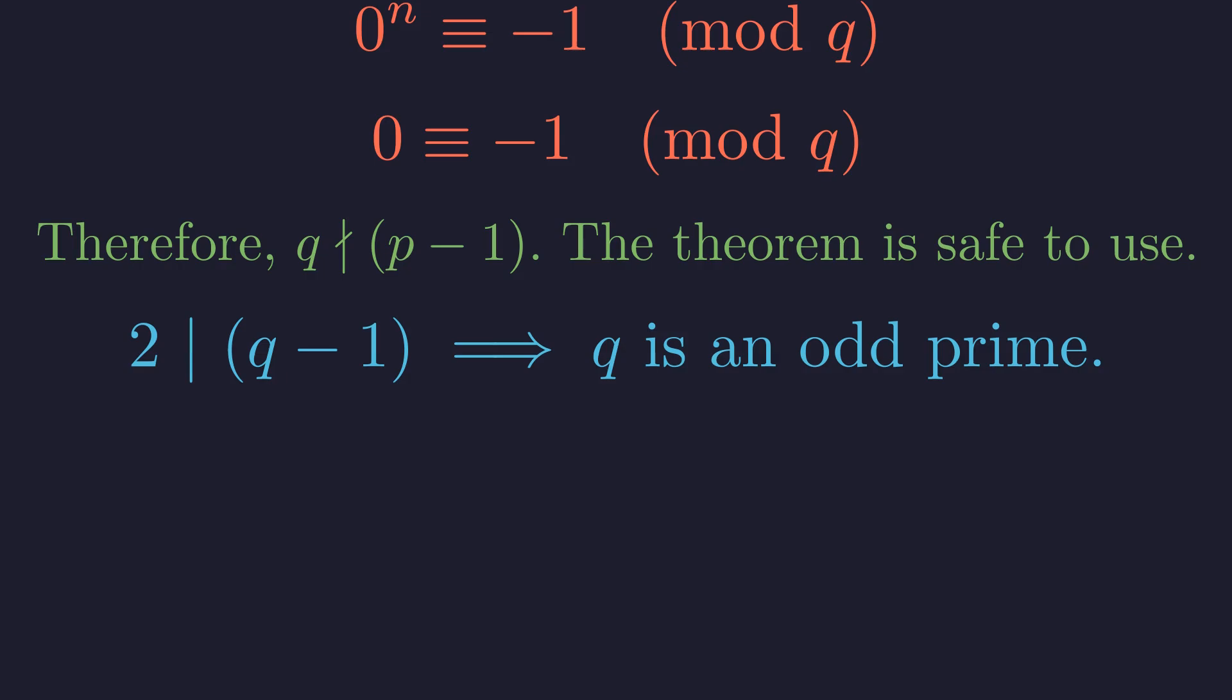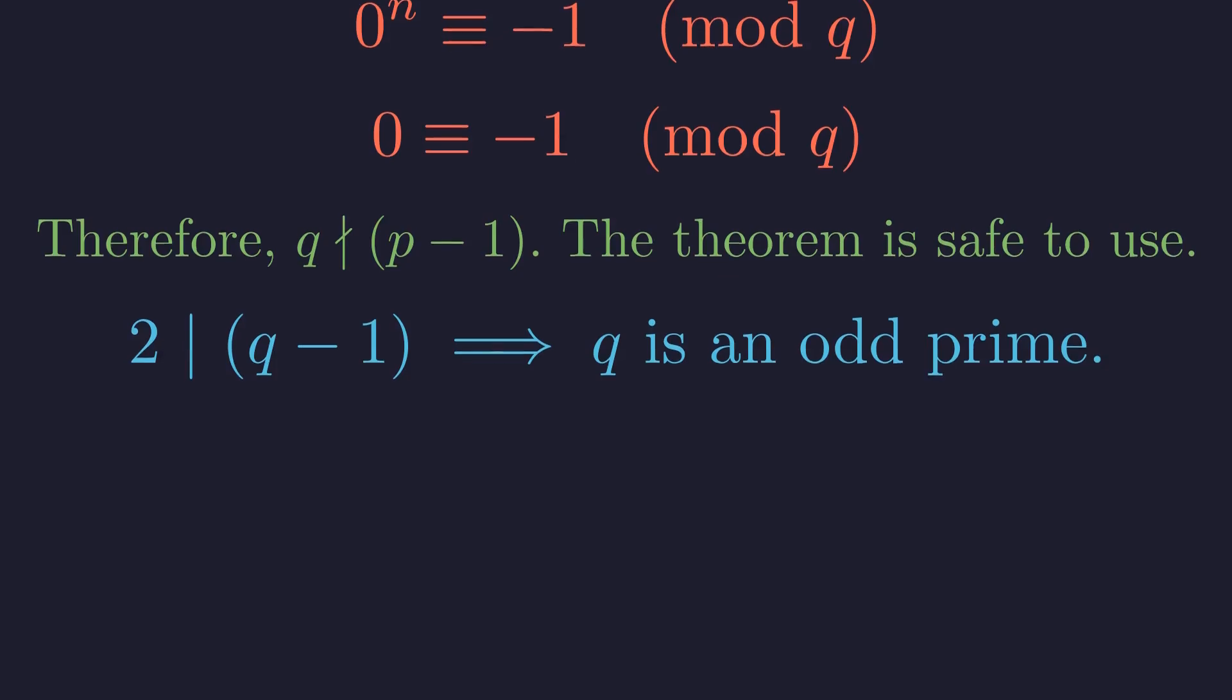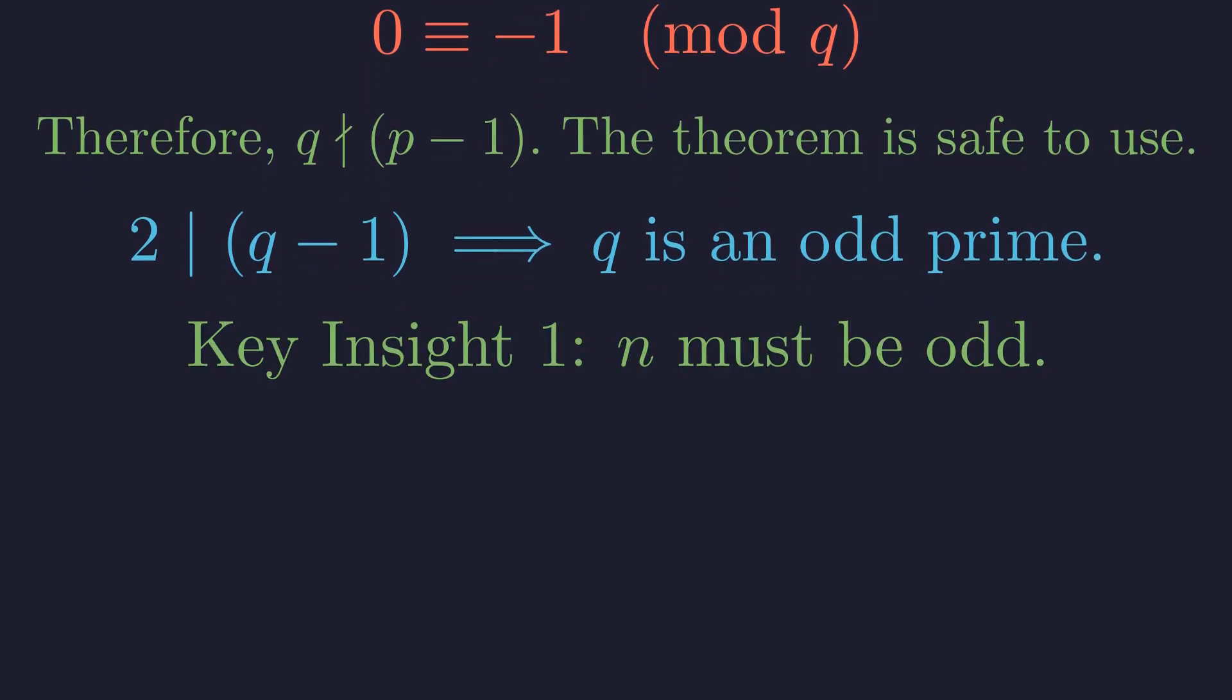Consequently, all prime factors of n must be odd. This means n itself must be an odd number. This is the first critical deduction for the case of odd primes: n must be odd.